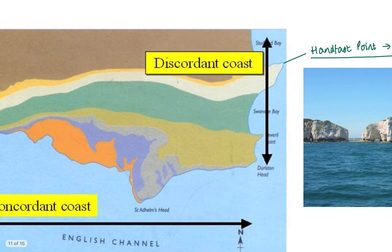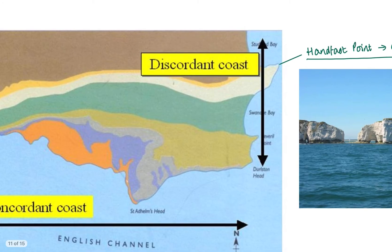We also have what we call a discordant coast. This is where our different types of rocks lie vertical to the sea. Here we've got lots of different geologies touching the sea, which is different to our concordant coast. This influences the type of landforms that we find in these areas.